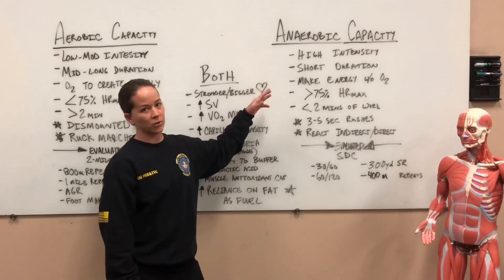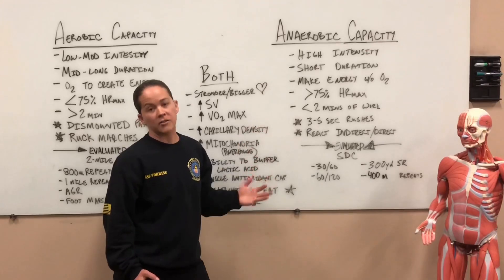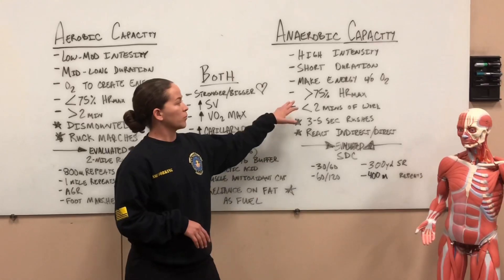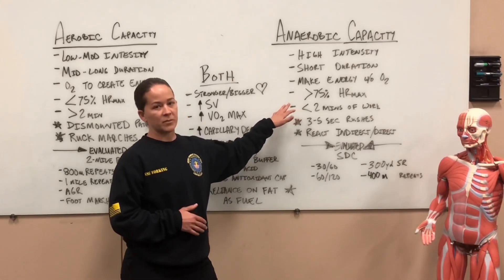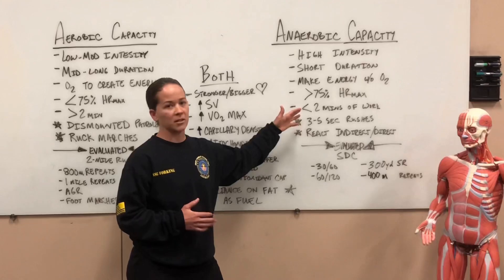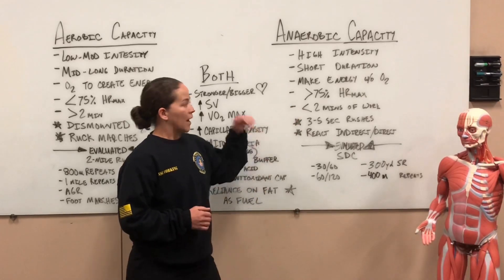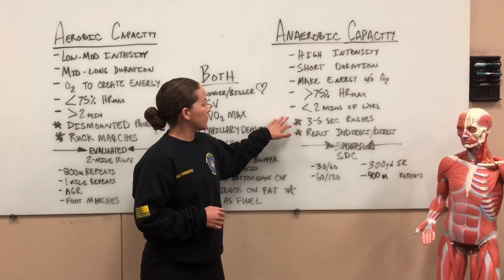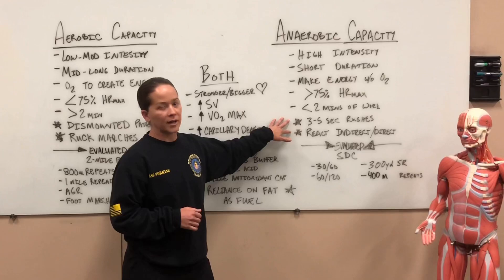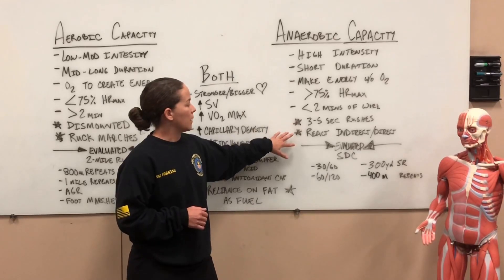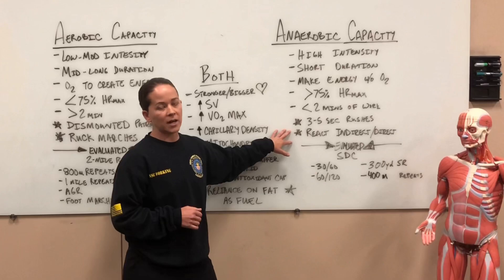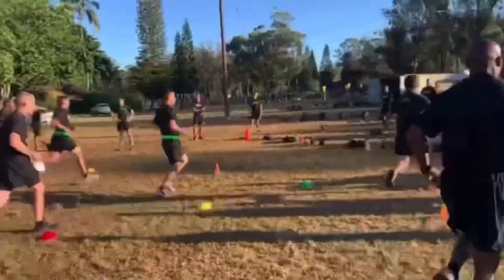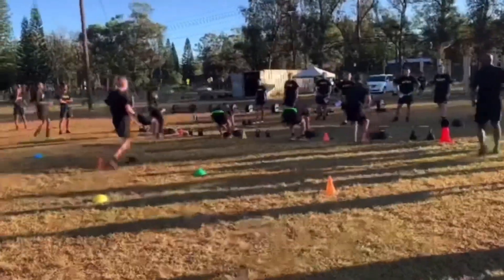With anaerobic capacity training, remember that it's high intensity, short duration — our bodies don't need oxygen to create energy, which is why it's an unsustainable type of work where the intensity is greater than 75 percent of our max heart rate and the duration is usually less than two minutes. Some tactical athlete activities are going to be three to five second rushes, reacting to indirect and direct contact, and we're evaluated on our anaerobic capacity with the sprint drag carry on the ACFT.